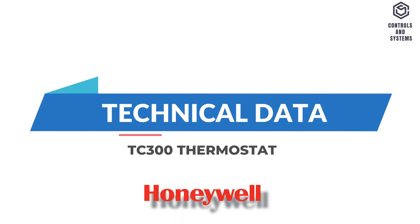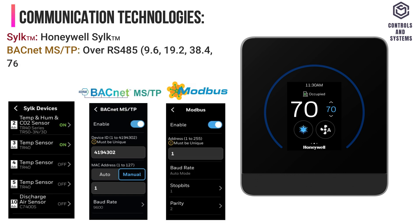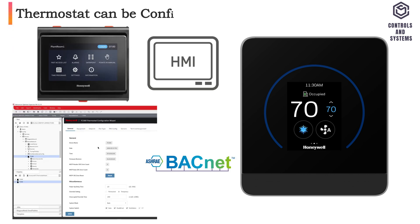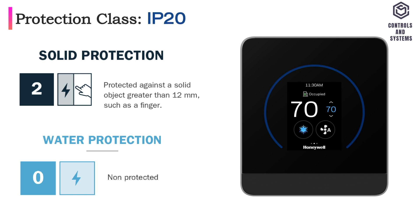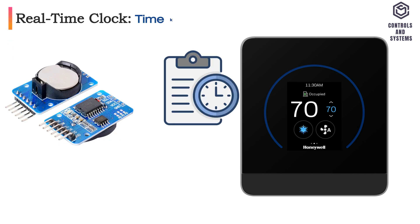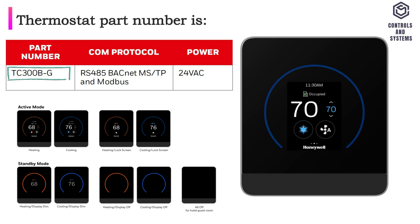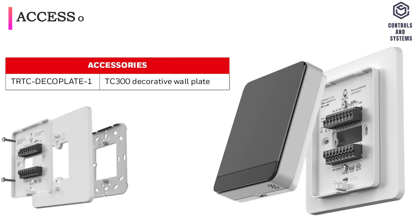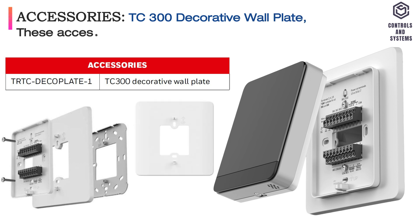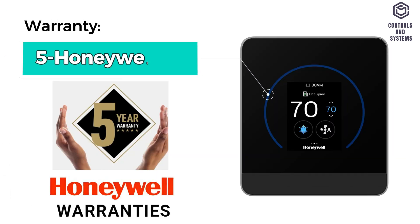Technical Data. Communication technologies include Honeywell Silk, BACnet MSTP, and Modbus RTU. The thermostat can be configured via HMI or BACnet. Protection class is IP20. Real-time clock provides timekeeping accuracy with 72-hour retention during power loss. This thermostat part number is TC300BG. Accessories include the TC300 decorative wall plate, available by separate order. This device comes with a 5-year Honeywell warranty.